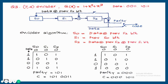Question 3: again a 7,4 encoder, but the polynomial is written as G(x) = 1 + x² + x³. When written in this format, it should be taken as a mirror image. The sequence S0, S1, S2 should be maintained from lowest to highest, same as before.